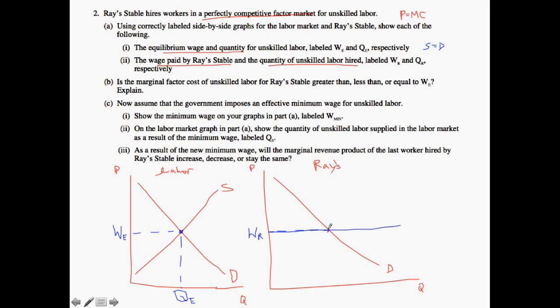So again, let's think about this. What this is saying is Ray is a price taker. And because he's a price taker, he's going to see how the labor market acts and then set exactly equal to the labor market because we're in a situation in which P equals MC. It's perfectly competitive. And therefore, Q-R is going to be right here. And we've essentially solved part 1 and part 2. So let's go ahead and move on to part B.